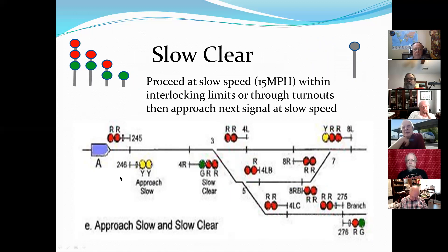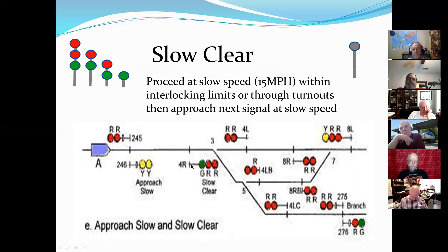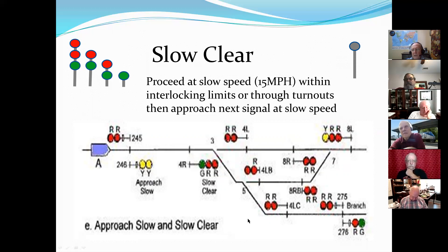Slow clear: train A sees a yellow over yellow, which means approach slow — not approach prepared to stop, just approach the next signal at slow speed. When you hit 4R, you should be at the slow speed limit. 4R is telling you that you're going to be sent to a diverging route at slow speed — slow clear. He can continue at slow speed through the turnout and be routed through turnouts 3 and 5 out to signal 276. That's how you set up for a slow clear.